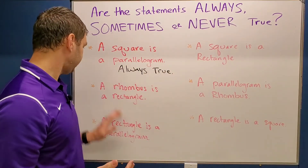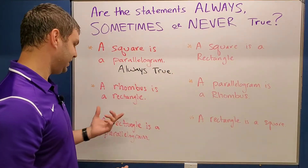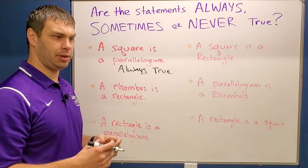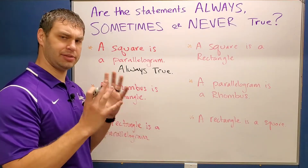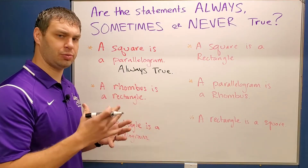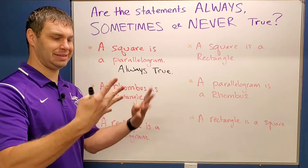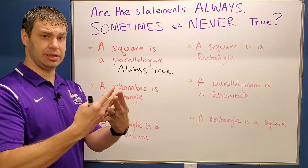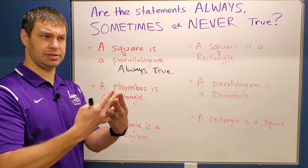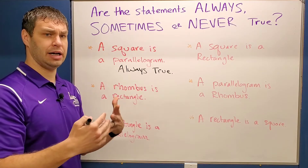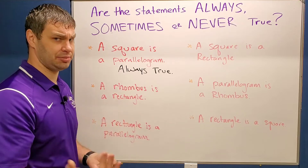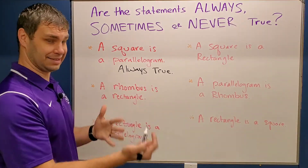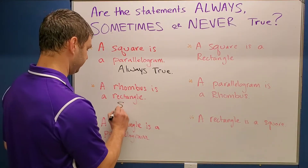The next one says a rhombus is a rectangle. If you think about it, remember when we talked about squares — squares were kind of the overlapping of a rhombus and a rectangle. Since that's true for a square, this is going to be just sometimes true. It's only true when it is a square.